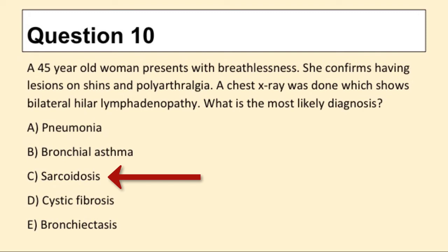Question 10. A 45-year-old woman presents with breathlessness, lesions on her shins, and polyarthralgia. A chest x-ray shows bilateral hilar lymphadenopathy. What is the most likely diagnosis? The answer is C: sarcoidosis.